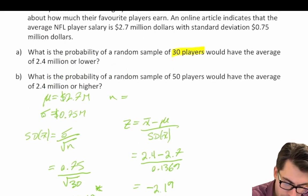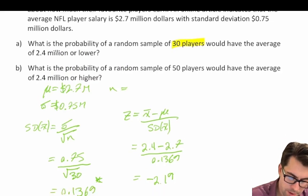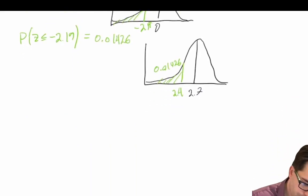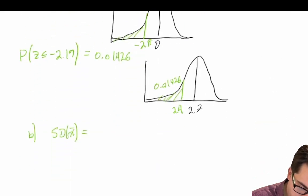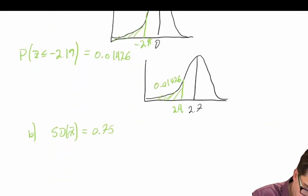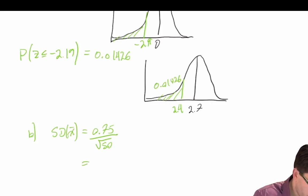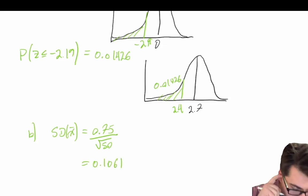Finally, what is the probability that a random sample of 50 players would have an average of 2.4 million dollars or higher? We recalculate the standard deviation since the sample size changed. SD of x-bar equals 0.75 divided by the square root of 50, giving us a standard deviation of 0.1061.